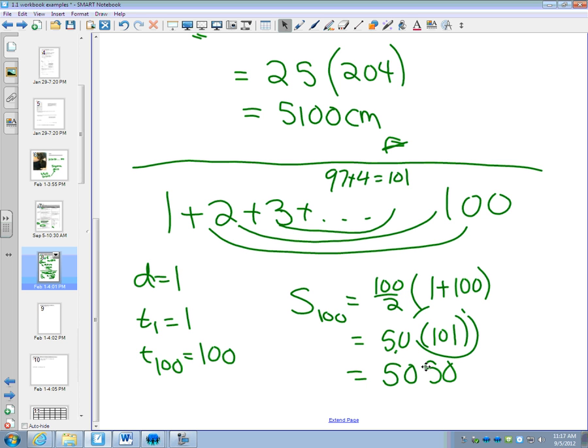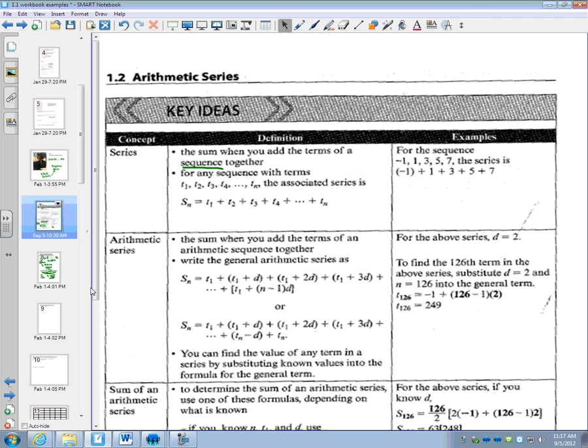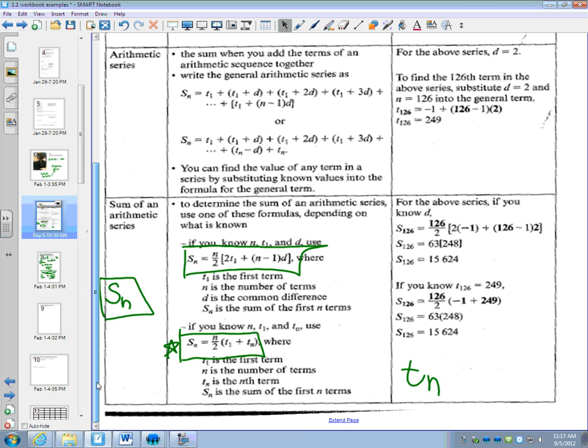So all it is is we're getting our known information and then we're substituting it into two different formulas. So depending on what you know, you may use Sn, this first one, or the second one. You can always find the last term if you've been given enough information. So this one you can use, but sometimes without finding that last term, you can use this one. Thank you.